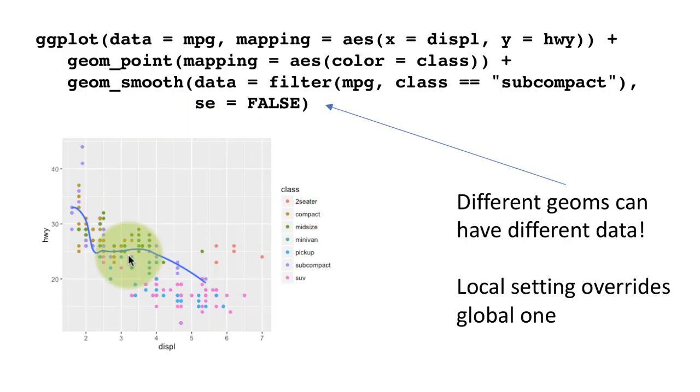So that's what you're seeing here. That this smooth line, this is somewhat of a misleading chart, actually, which is why I sort of walked back a little bit on this. Because one would, thinking, looking at it, one would think that this smooth line represents the entire data. In fact, it doesn't. It represents only the line for the subcompact cars. So I would not recommend this as a good practice. But I am using this only to illustrate a certain concept that different layers can have different data.